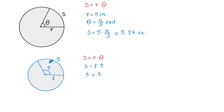So S is exactly the same as T, which means we can replace S with T. As an example, if this angle measures 2 pi over 3 radians, then the length of this arc is 2 pi over 3 units.